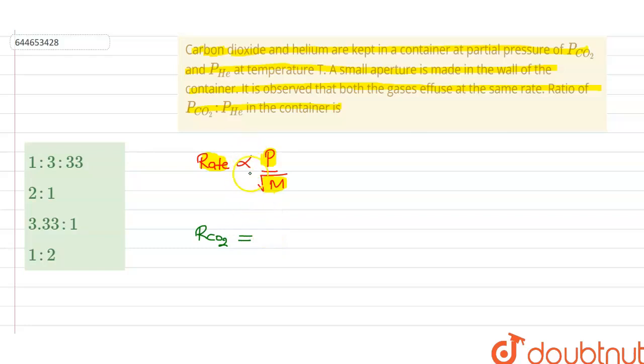If we find the rate of CO2, it will be equal to, on removing this proportionality, a constant K times the pressure of CO2 divided by the square root of the molar mass. CO2 molar mass will be equal to 44.